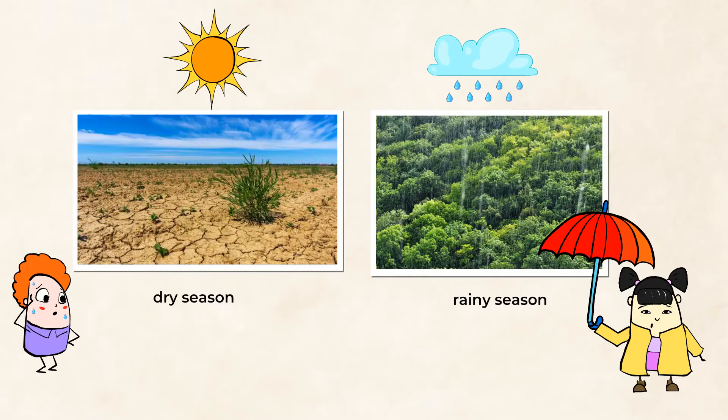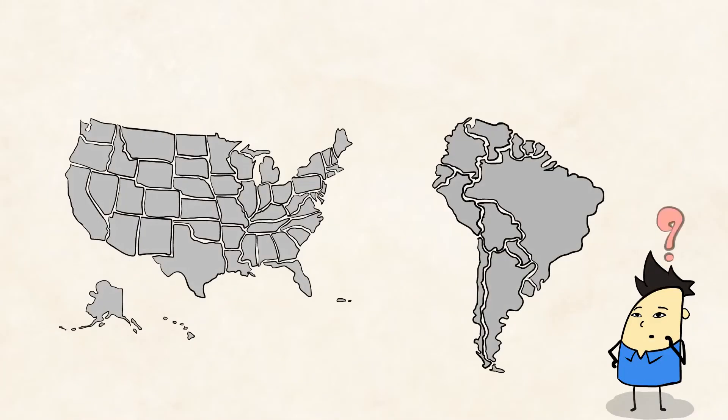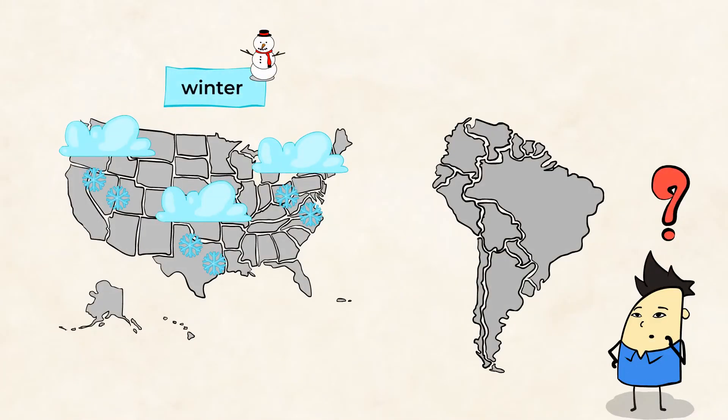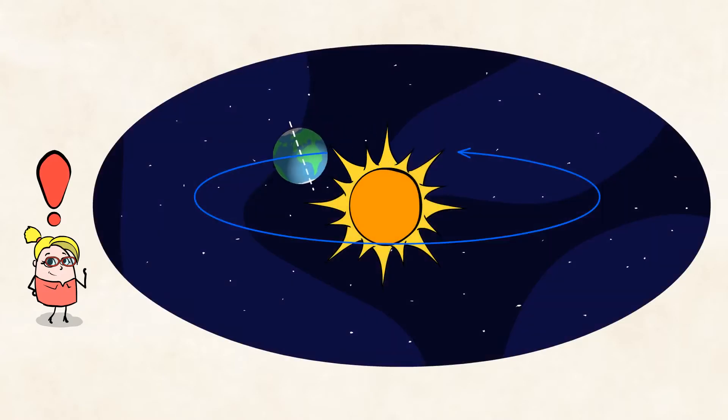Now, let's get back to Chen. Why is it winter here in the United States, but summer in Argentina, where Chen has traveled to? Take a closer look at the Earth as it orbits the sun. What do you notice? Look at the position of the Earth. It looks like it's leaning to the side. That's because it is. The Earth is tilted on an imaginary line called an axis.